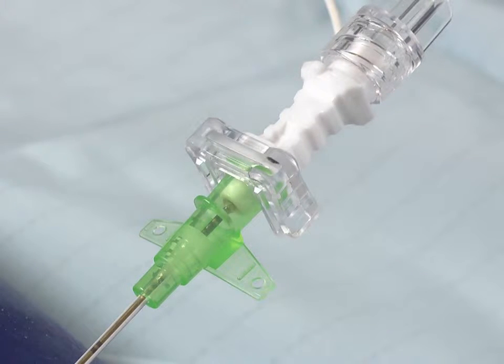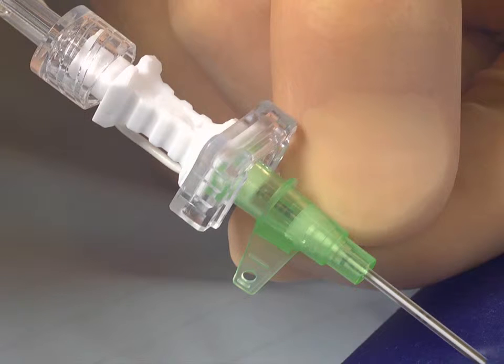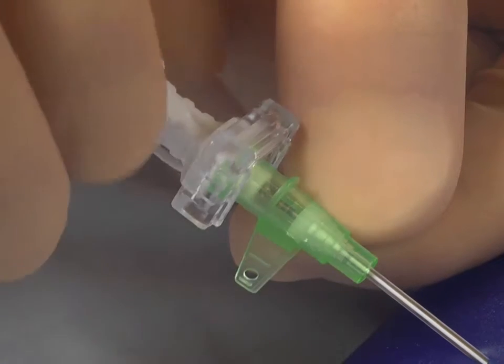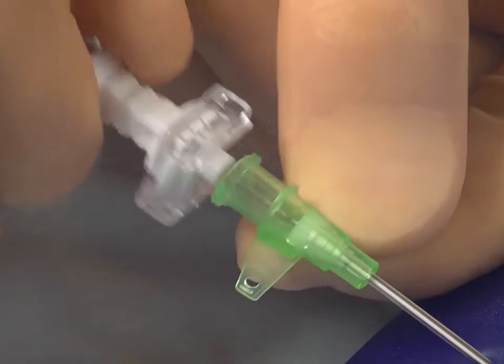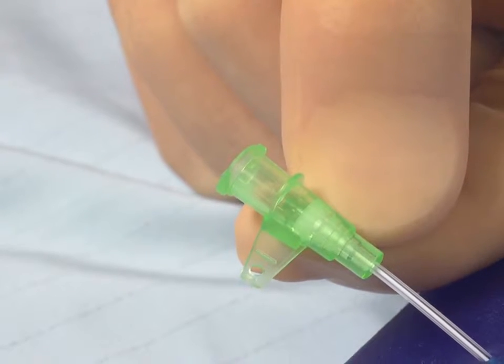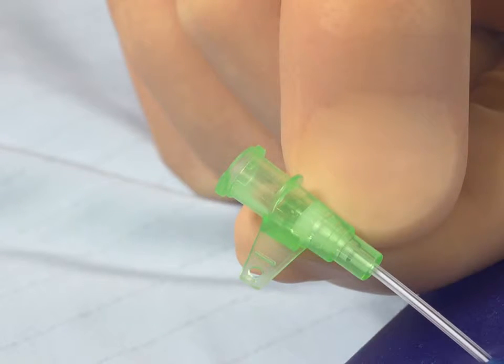Some newer versions of the E-catheter contain the fixed clip, which connects the outer sheath and the Sonoplex needle together. In order to remove the needle from the sheath, you must twist the needle 90 degrees clockwise or anti-clockwise before it will detach, as demonstrated.